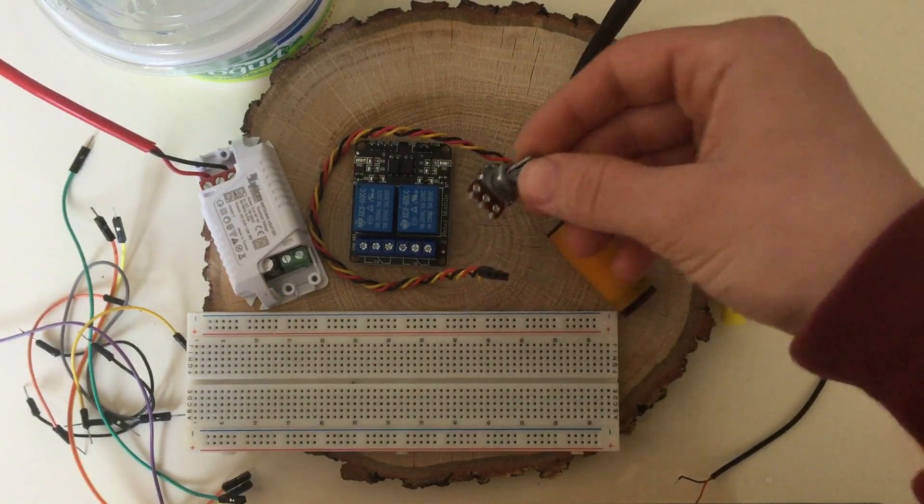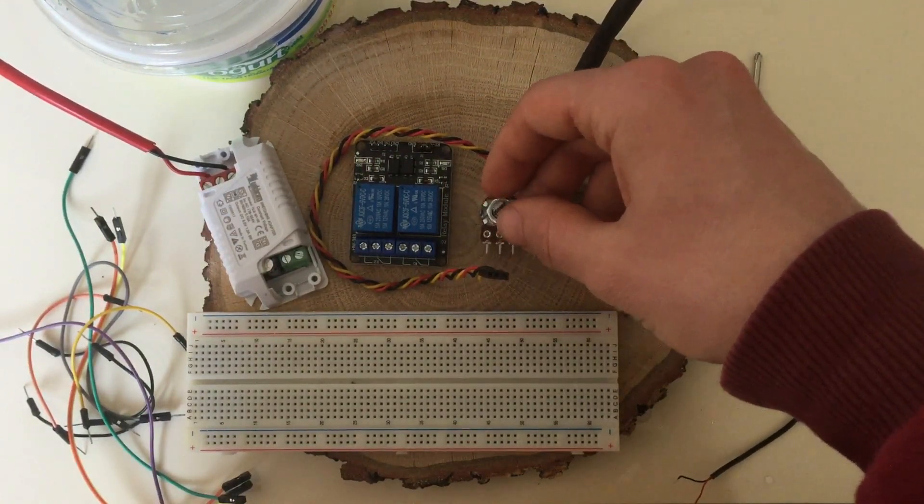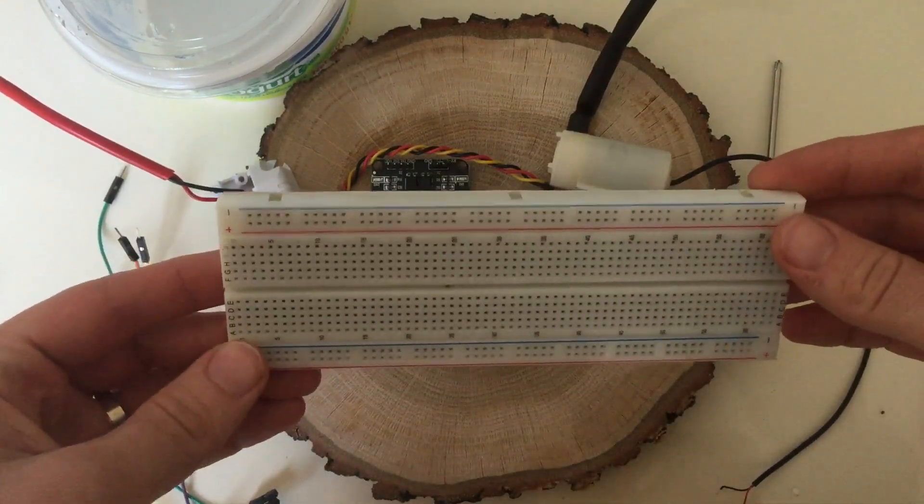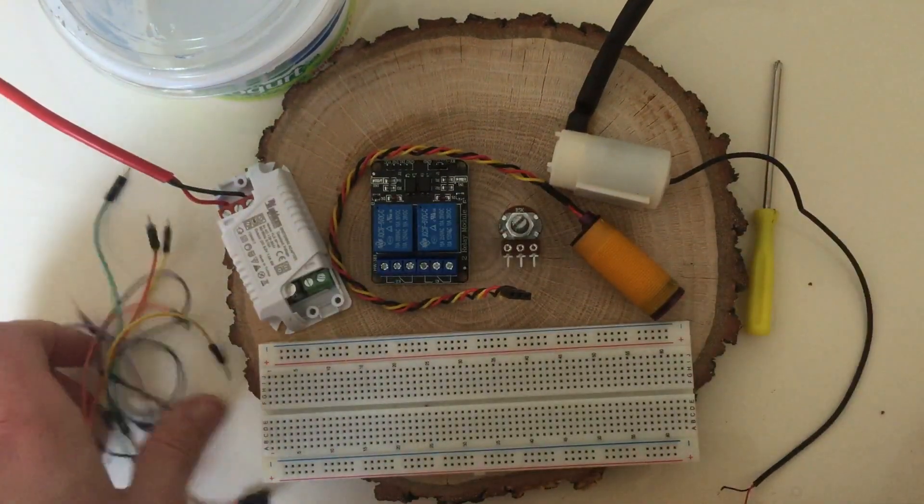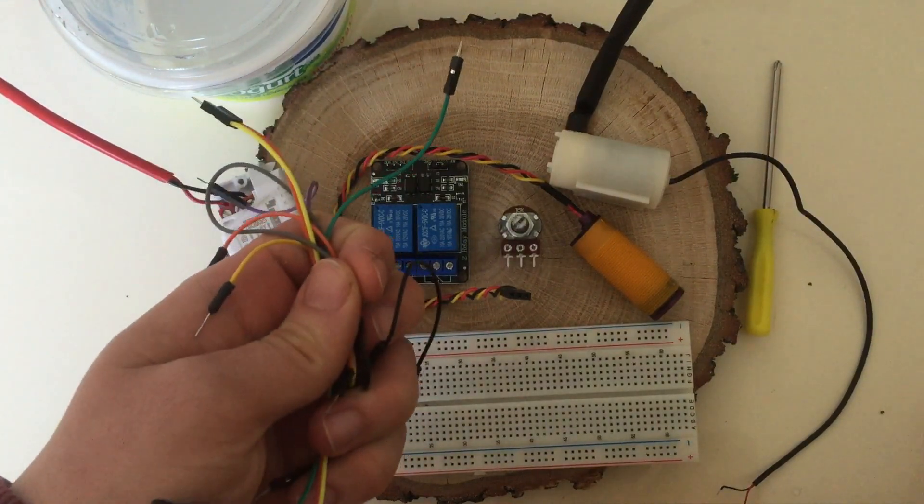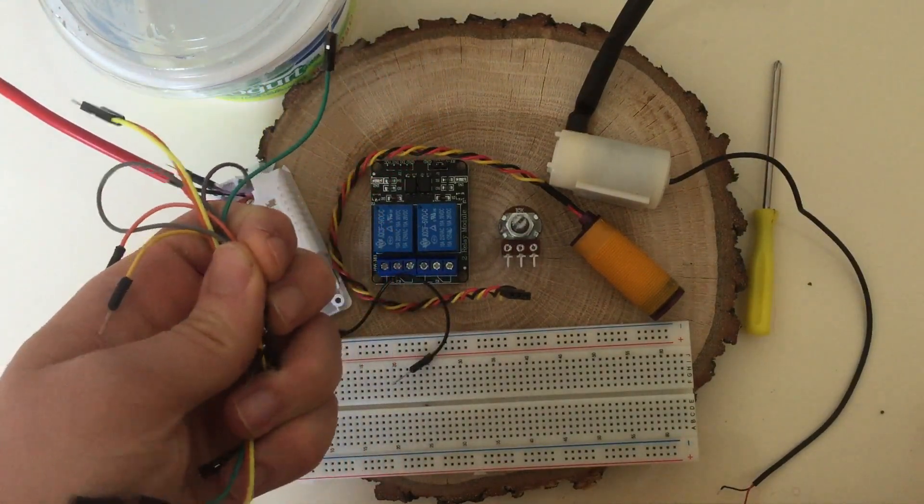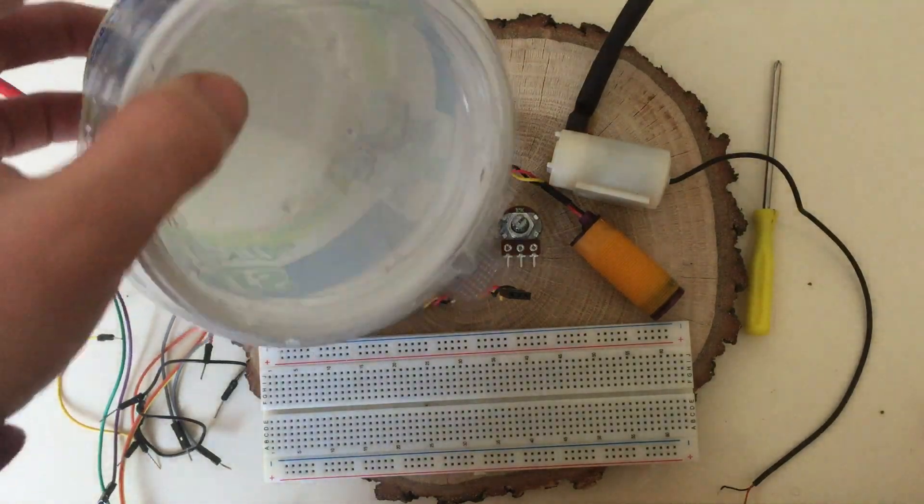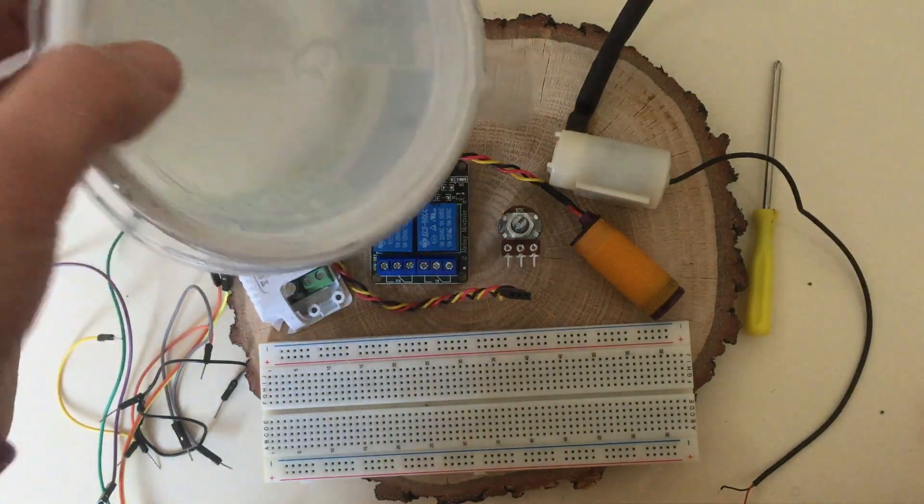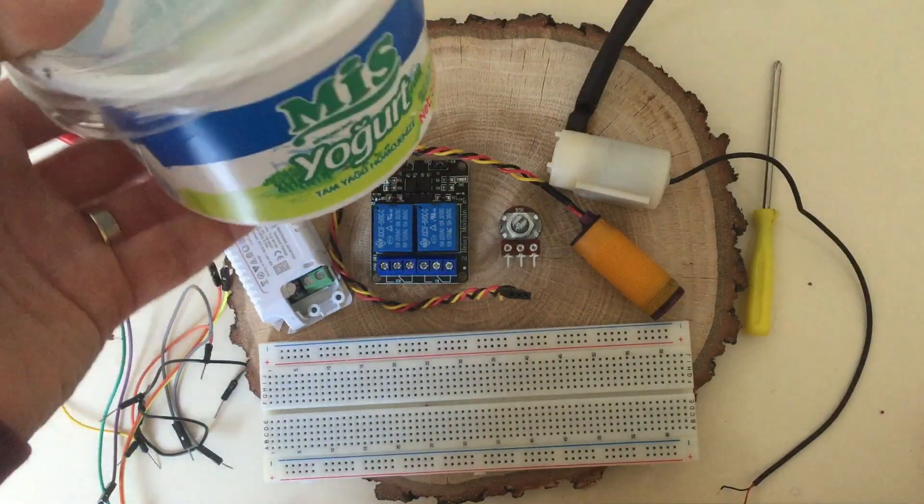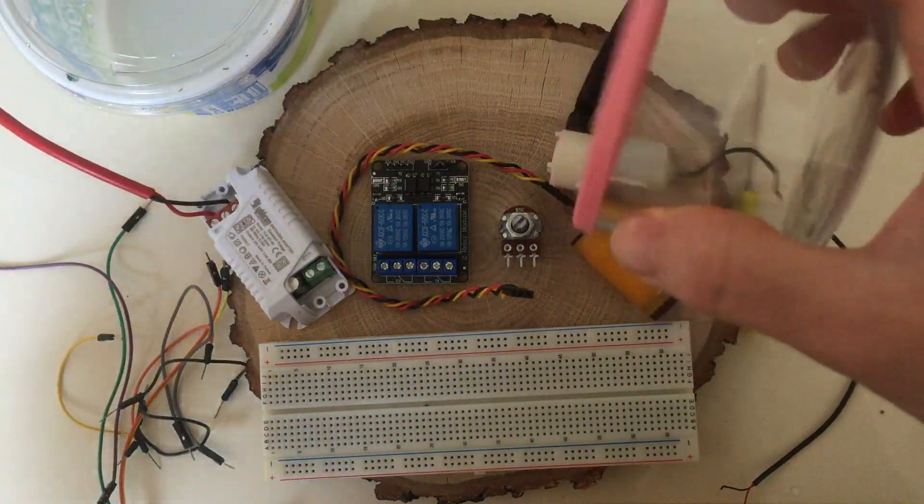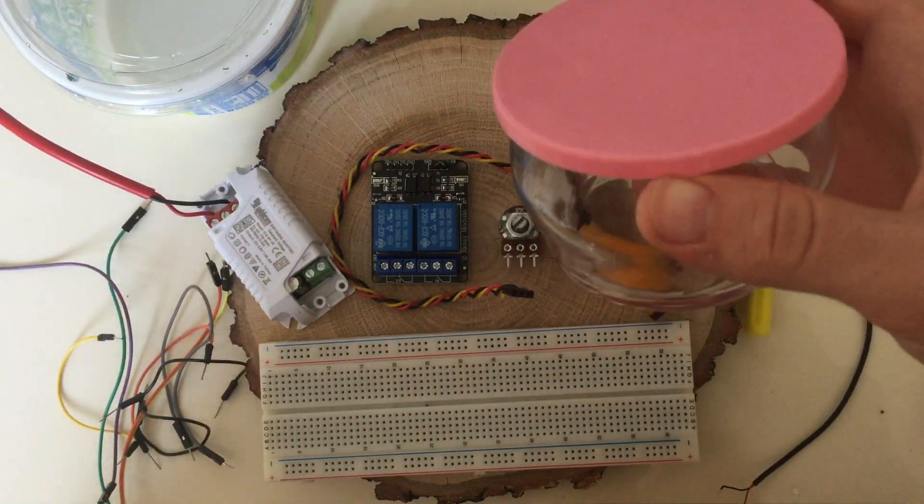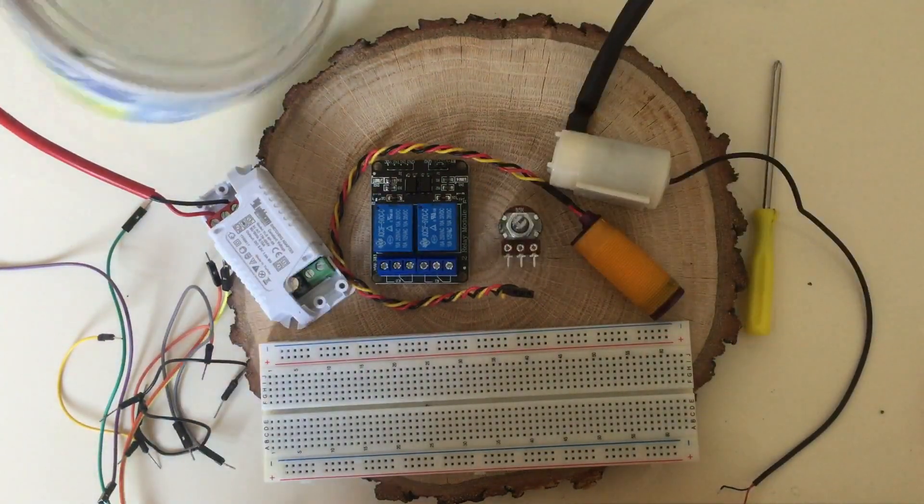We need a potentiometer to adjust the flow rate of the pump. We will use a breadboard to make the connections and you can use a smaller breadboard than mine. And we will need some jumper wires, male to male and female to male types. We are also going to need a container to store the disinfectant. I will use this yogurt pack but I recommend using an airtight container to prevent the disinfectant from vaporizing.